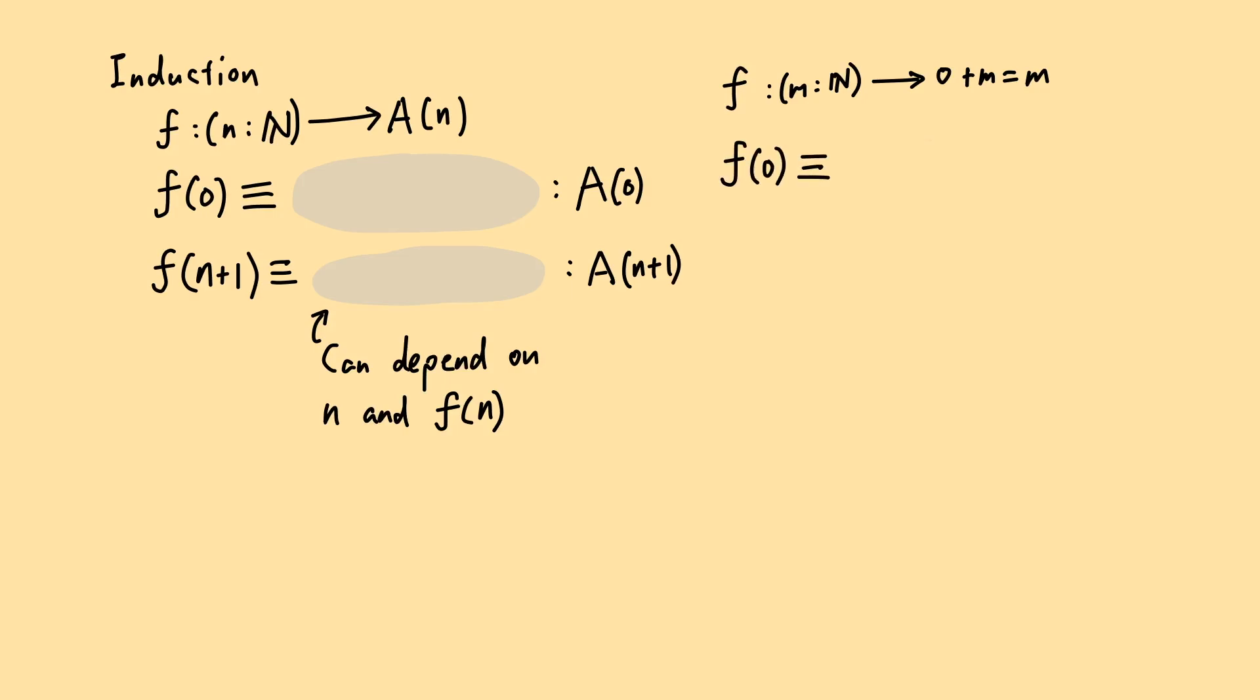By induction, we need to first prove 0+0 equals 0. The left-hand side is definitionally 0, so we just need to prove 0 equals 0. This can be proven by reflexivity, which is the constructor for the identity type when the two sides are the same. As an expression, we can write it as refl₀, but it's also valid and more flexible to use words.